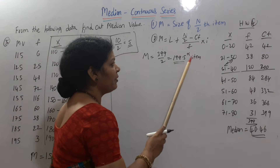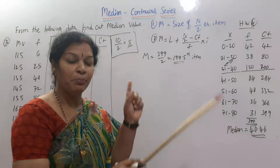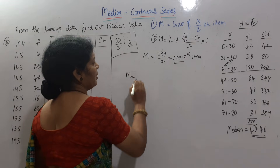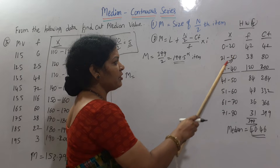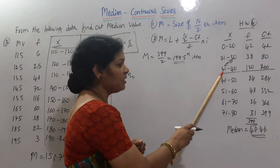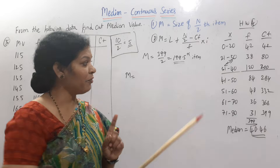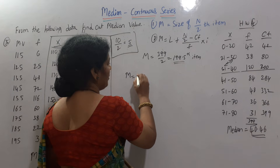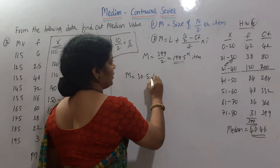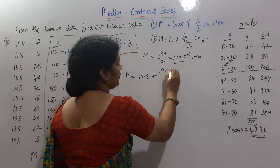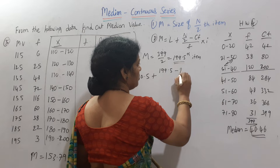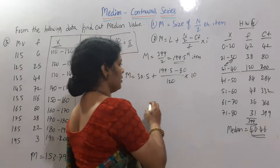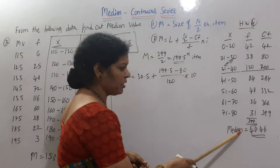Where is the 199.5th item? Because 195 — the item immediately above is 200. So here we will use this. n by 2 is 199.5, minus CF which is 80, frequency is 120, class interval is 10. The final calculation gives you 40.46.